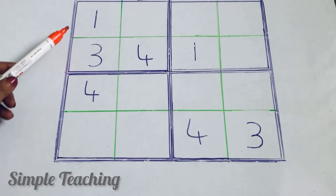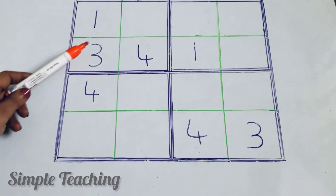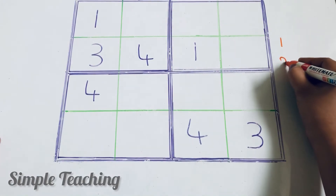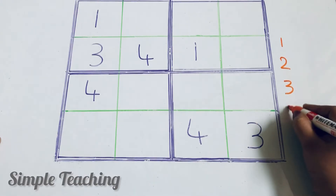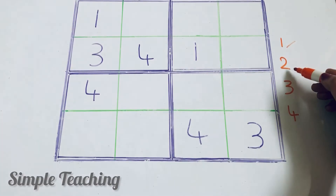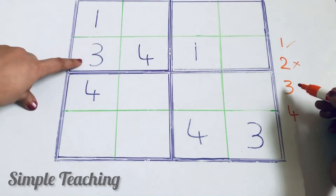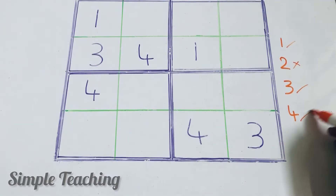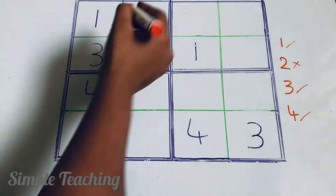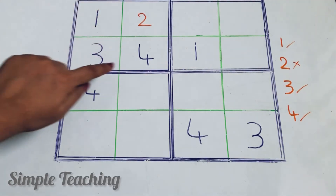We can guess the missing number easily. We will have only numbers 1 to 4. To make it easier to understand, I am writing the numbers here: 1, 2, 3, 4. Let us check — is there a 1? Yes, there is 1. Is there a 2? No, there is no 2 in this box. Is there a 3? Yes. Is there a 4? Yes. So the missing number is 2. Write the 2 in this box. Now this box is filled.